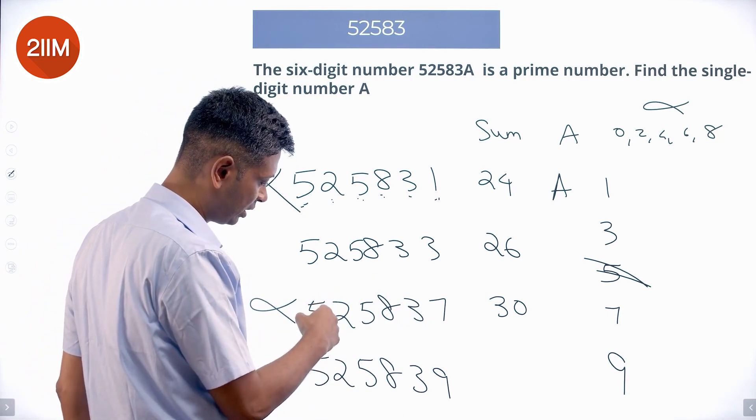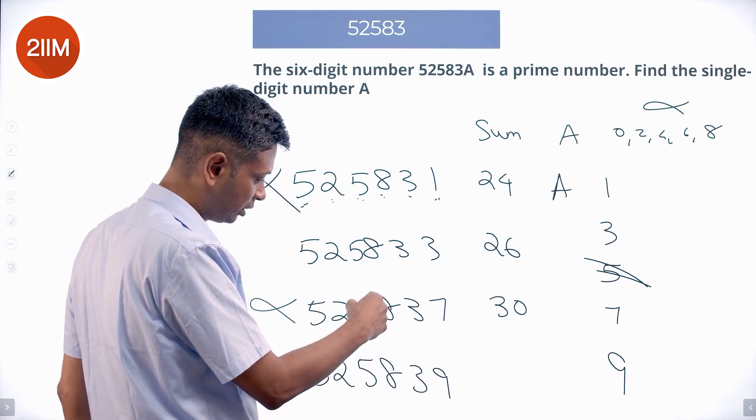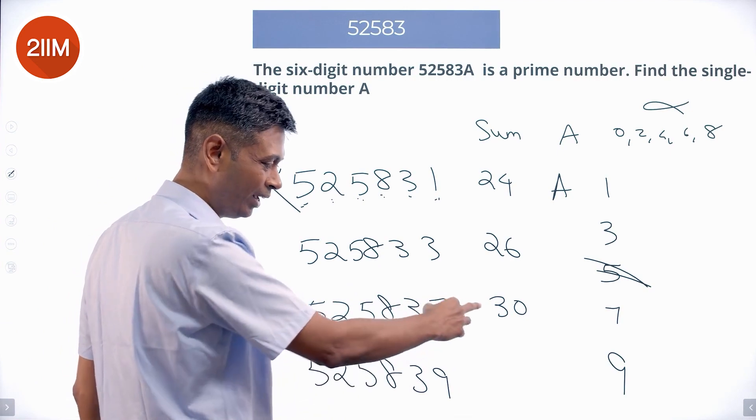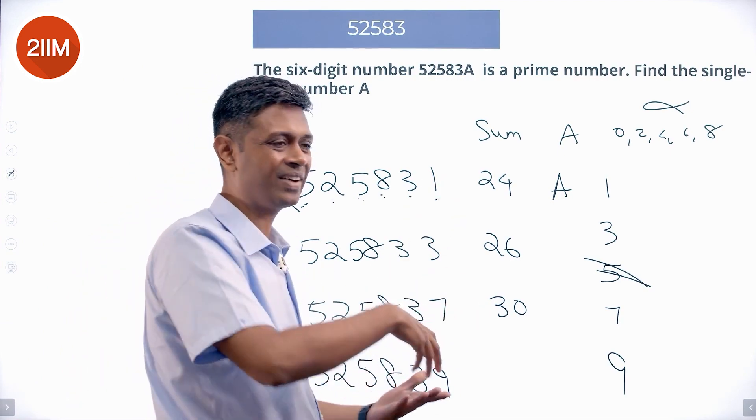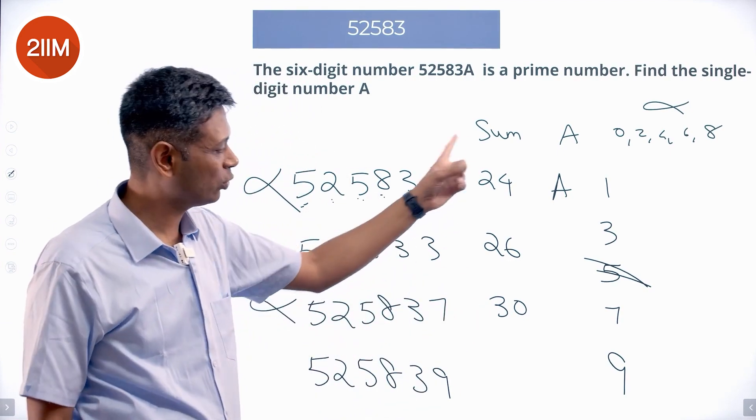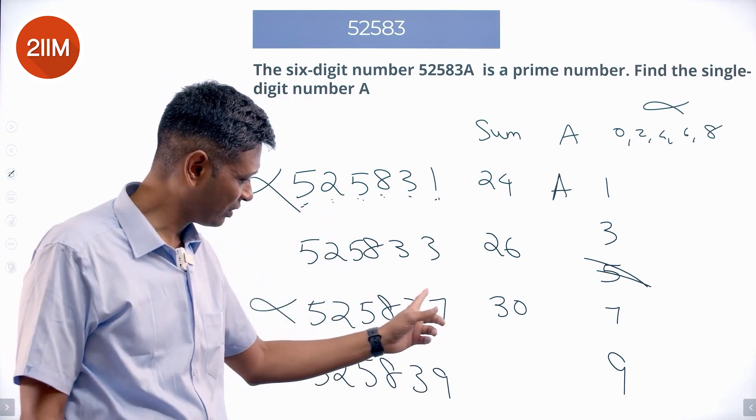How do I get 30? I can add everything up: 5+2=7, 7+5=12, 12+8=20, 20+3=23, 23+7=30. Instead of 1 I put 7, so I added 6—24+6=30. Instead of 7 I put 9.